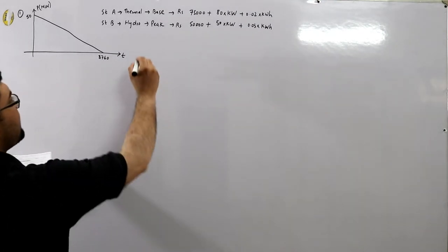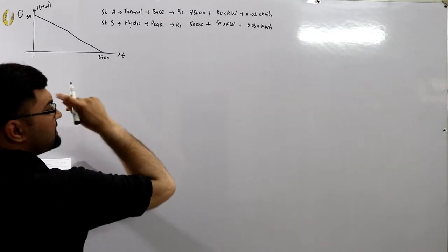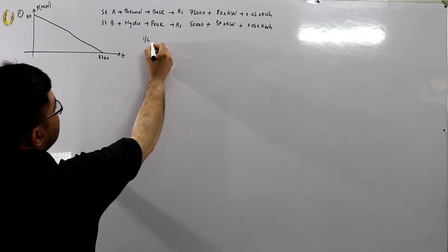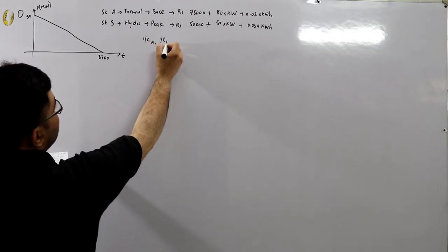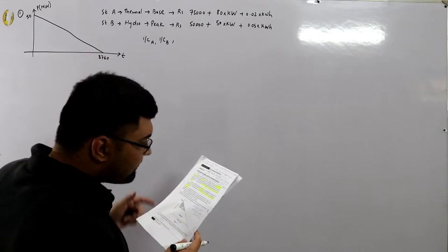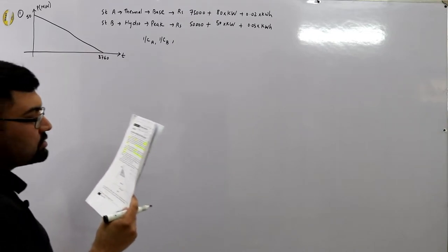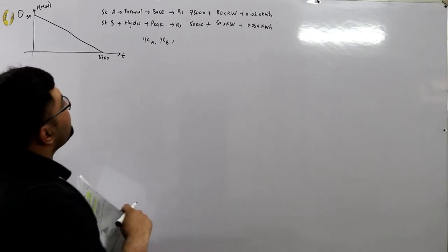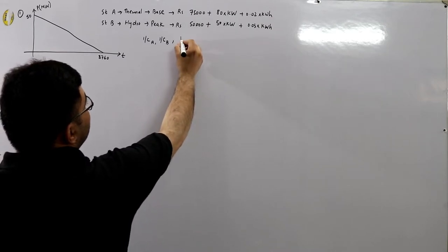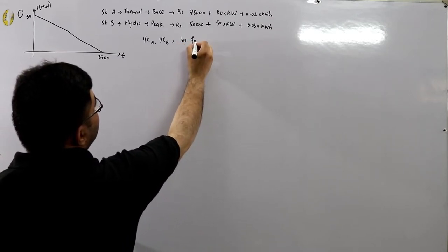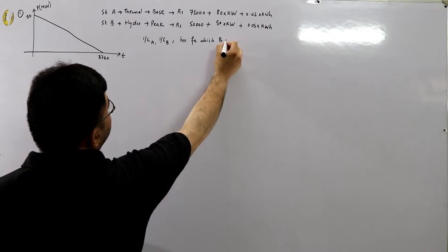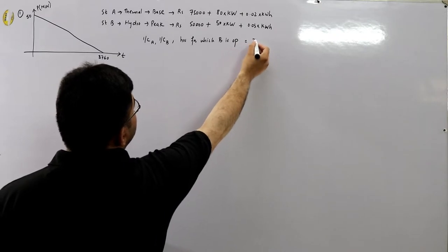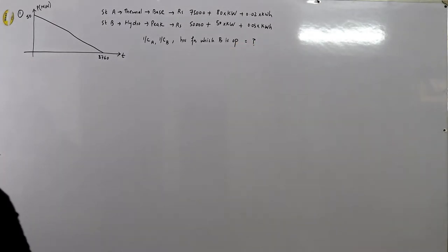For station B the cost model is rupees 50,000 fixed cost, plus 50 per kilowatt of maximum demand, plus 0.03 per kilowatt hour — all in the three-part form. We need to determine the installed capacity of each station and for how many hours per year the peak load station B should be operated to give minimum cost per unit generated.